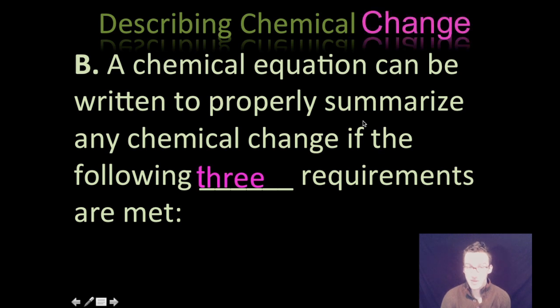Now once we observe these chemical changes, we need to describe them in ways that are really easy not only for us to understand but our fellow chemists. We are going to write them what are called chemical equations. To properly summarize any chemical change, we do need to follow three requirements.